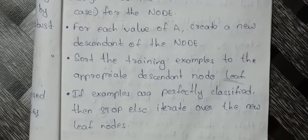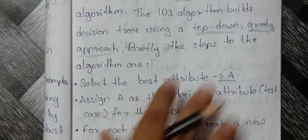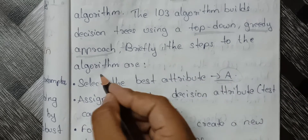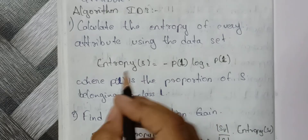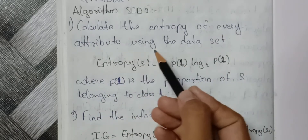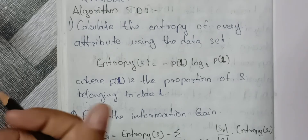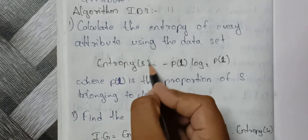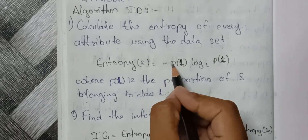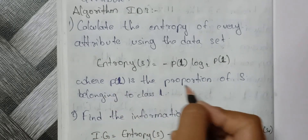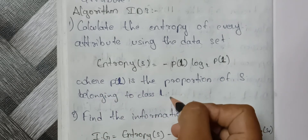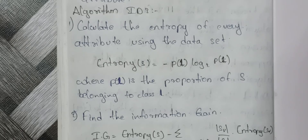For the sake of a basic idea, ID3 is the algorithm — just a brief description. The actual steps are: first, calculate the entropy of every attribute using the dataset. The entropy of S is equal to minus the sum over classes L of probability of L times log base 2 of probability of L, where probability of L is the proportion of S belonging to class L.